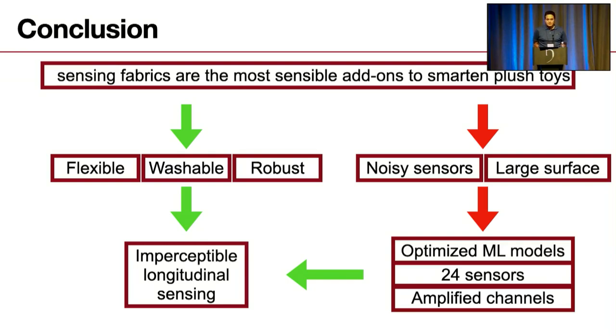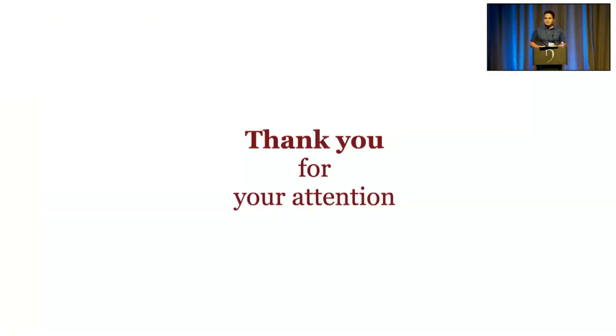Telling you that sensor fabrics are the most sensible and most suitable add-ons to our current plush toys to enable them into smart sensing platforms because they are flexible, they are washable, they are robust. However, fabric sensors are noisy and they may require large interfaces to actually serve large surfaces, which means we need optimized machine learning models, we might need large number of sensors, and we might need to amplify all those channels to pick up the tiny signals. But doing all this together, we get the imperceptible longitudinal sensing for our plush toys. We can implement many interesting applications with the toys. Thank you so much for listening. I'll be taking questions now. Thank you.